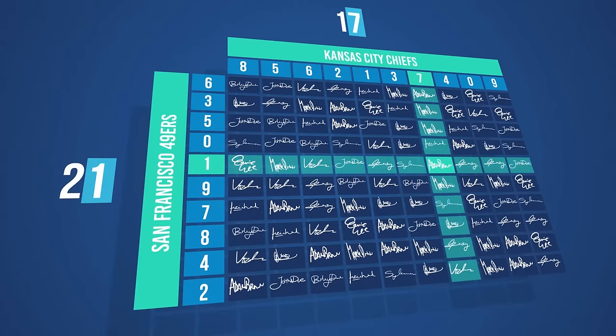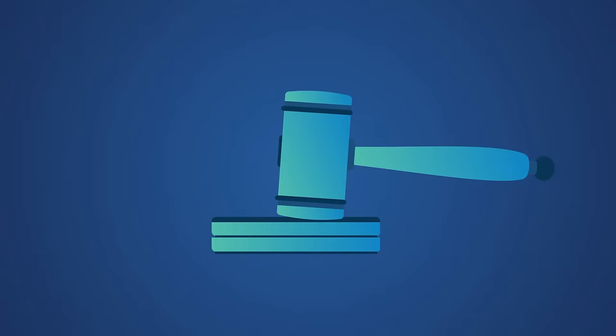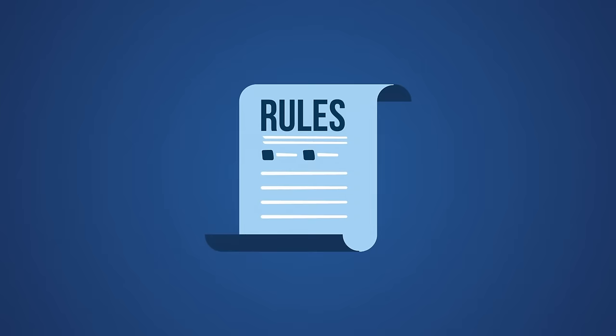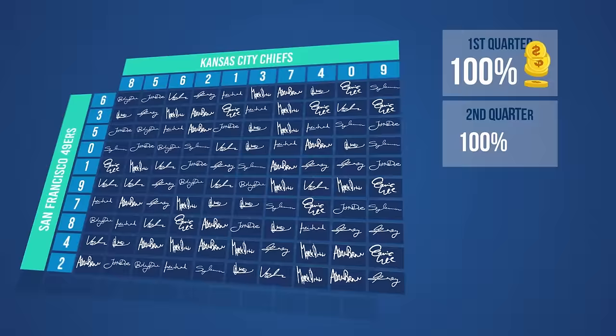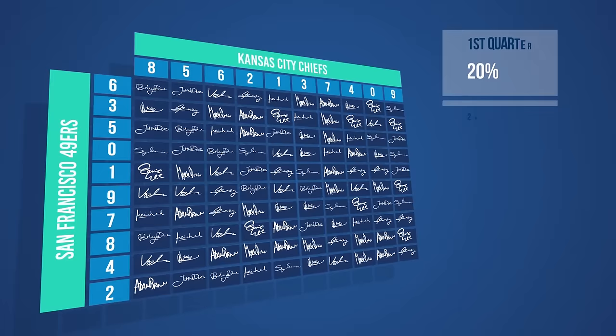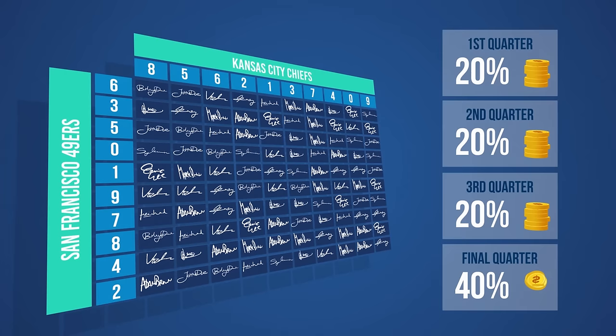The pool host determines the payout, which can vary depending on the host's rules. The first option would be to give 100% of the pool prize on each quarter of the game and refill the prize amount. However, the most common setup is one that divides the pool prize for each quarter — for example, 20% for the first, second, and third quarter winners, and the remaining 40% for the final score or fourth quarter.